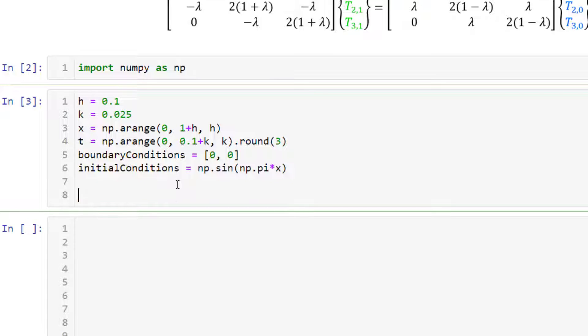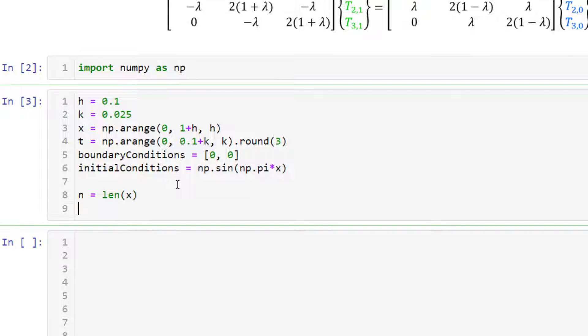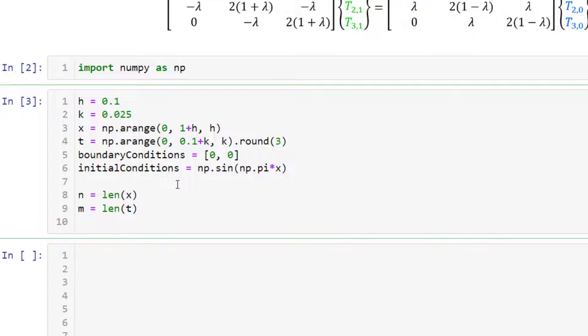The first step is to identify how many number of points there are in the x and the time direction. So we can use the length command and we'll store the one for time in m. Once you identify the size of your problem, you can create an empty matrix of zeros to store the result. So we'll say temperature equal to np dot zeros of the same size n, m.